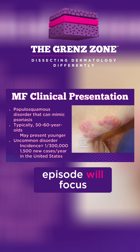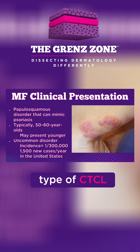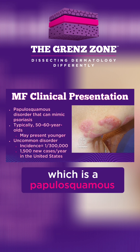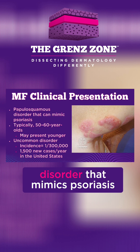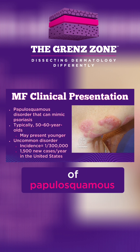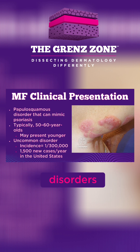Today's episode will focus on the most common type of CTCL, mycosis fungoides, which is a papulosquamous disorder that mimics psoriasis. Thus, we place it in the psoriasiform category of papulosquamous disorders.